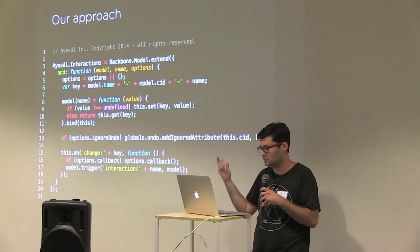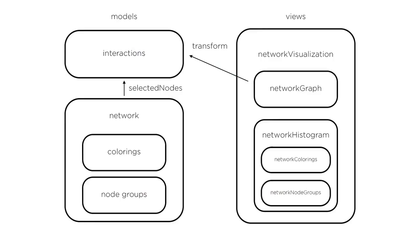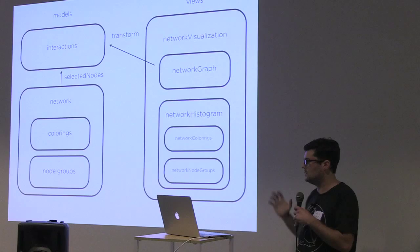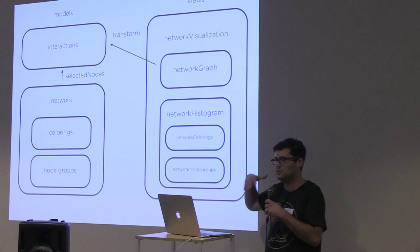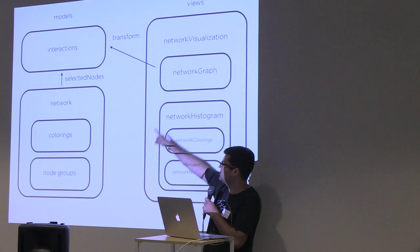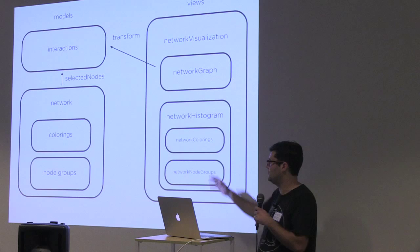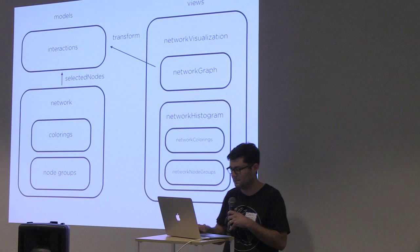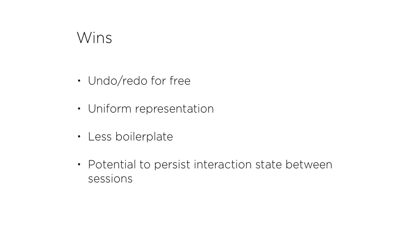In practice, when we have a view like the one we were looking at, we now have this separate interactions model and anything in the system can request a named interaction. Something view-specific, like the transform on an SVG, could be requested from a view to the interactions model. Something that's going to be shared across views — where we want multiple views to track its state — could be requested by a model. You can also have the parent view do this, with the caveat that you'd need the children to know about the parent.